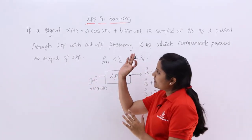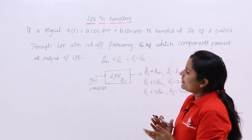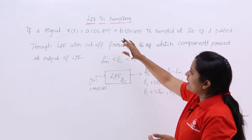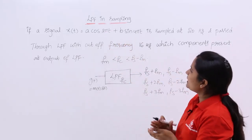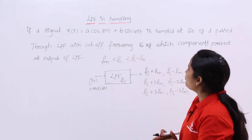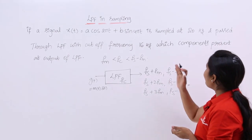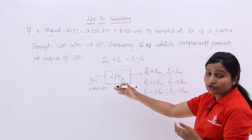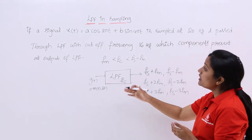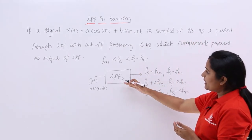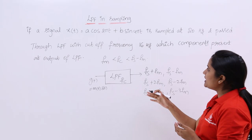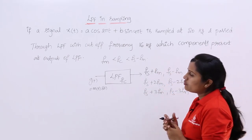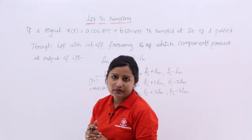For example, we will go through a problem. If a signal X(t) = A·cos(2πt) + B·sin(4πt) is sampled at 20 Hz and passed through an LPF with cutoff frequency 16 Hz, which components are present at the output of the LPF?